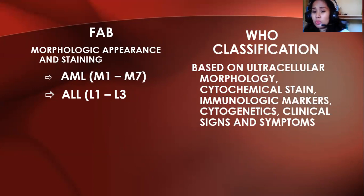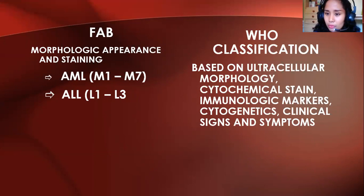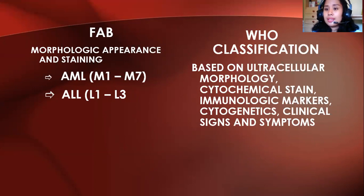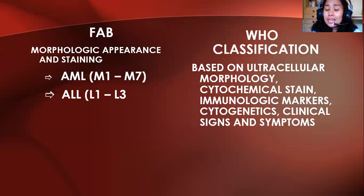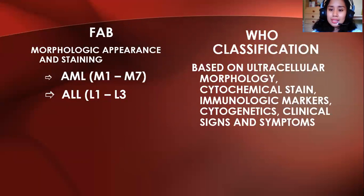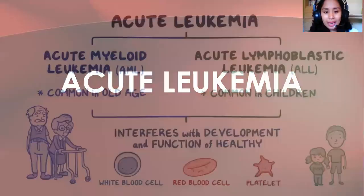The cytochemical stains used include myeloperoxidase (MPO), Sudan Black B, and periodic acid-Schiff (PAS). Immunophenotyping uses CD markers such as CD10 and CD33. Cytogenetics checks if chromosomes are normal or abnormal. The WHO classification is now used for clinical diagnosis — it is much more reliable and precise. Let's start with acute leukemia: acute myeloid leukemia first.